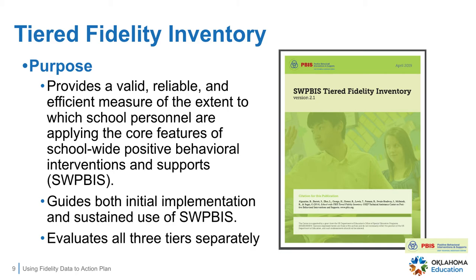The example we will be focusing on today is the Tiered Fidelity Inventory and how it can be used to measure fidelity and assist with action planning. The TFI is a research-based evaluation tool that measures how aligned the school-wide PBIS is to the core framework of systems, practices, and data. The action plan available in the Using Action Plans, Agenda, and Roster sections of this course is aligned to the TFI and will help your team create a framework that is proven to be effective. The TFI should be given by an external evaluator if possible to get the best results. You can use the TFI to evaluate all three tiers of PBIS. Often, schools will begin implementing at Tier 1. When they have achieved 70% fidelity, they will begin implementing at Tier 2. The TFI can guide this process.